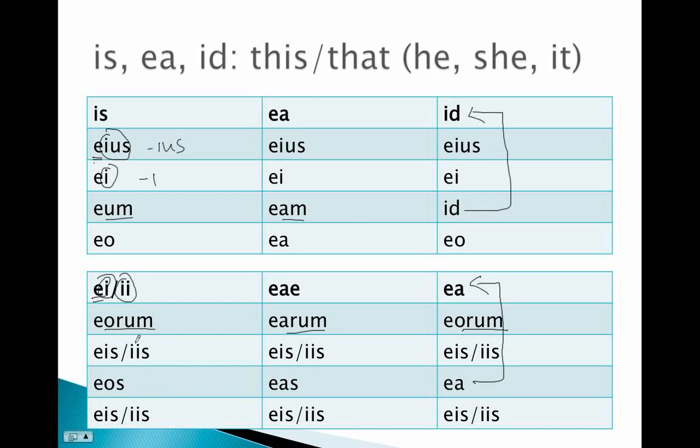So if you remember that if the ending begins in i, it can assimilate the stem to i. That's what happens here. This i picks up the i here. So it is iis instead of eis. And remember that is, ea, id, other than the genitive singular and the dative singular, these really are very close to being first and second declension adjectives.